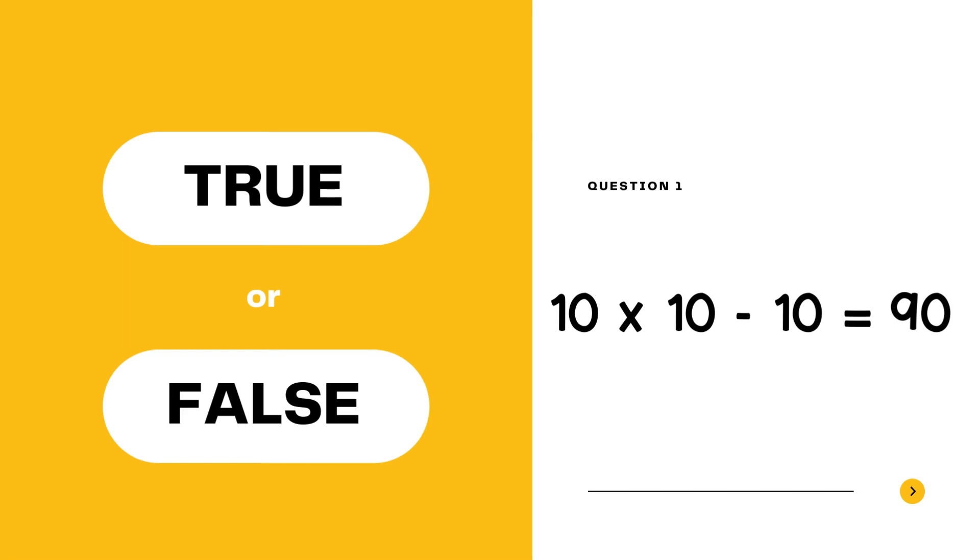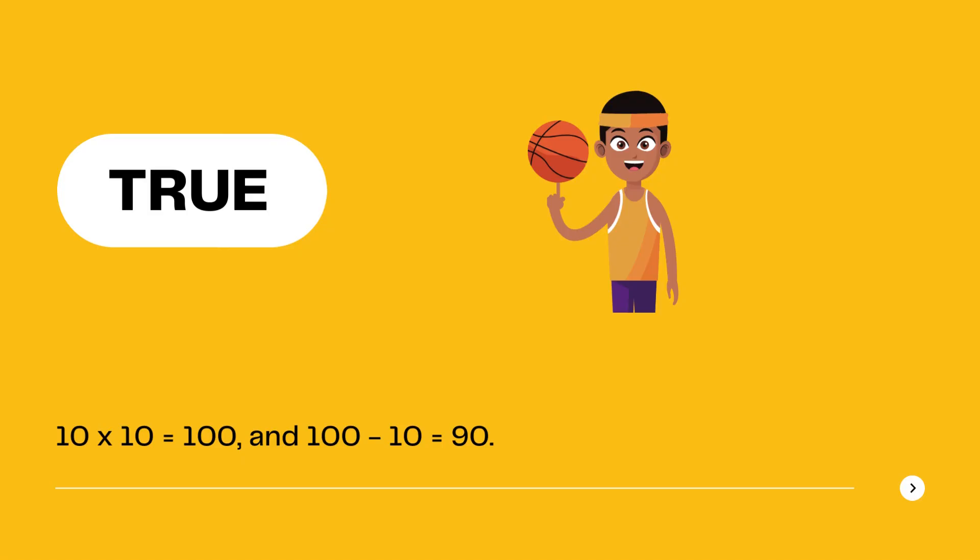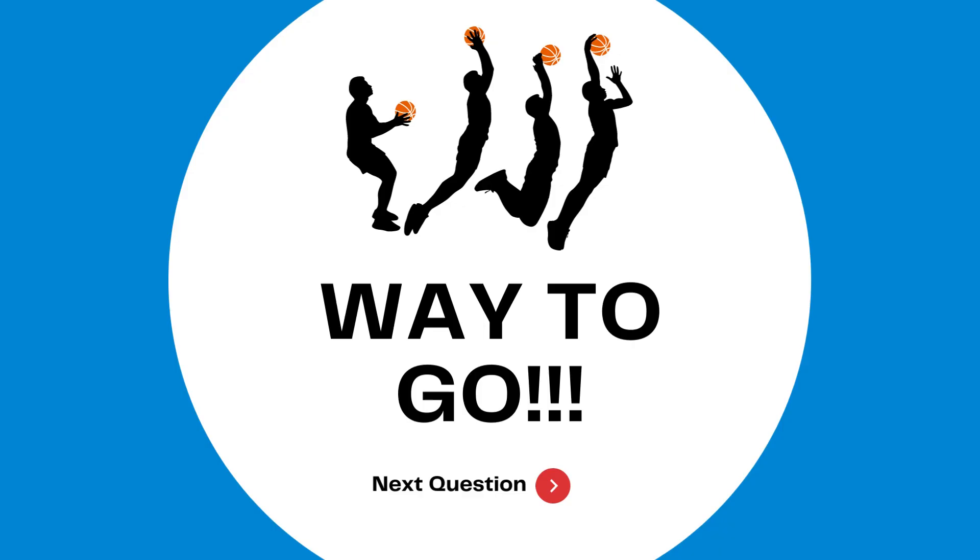Question one, true or false: 10 times 10 minus 10 equals 90. Pause here and then press play when you have your answer ready. The answer is true. 10 times 10 equals 100, and then you take 10 away from 100 and you get 90. Way to go, next question.